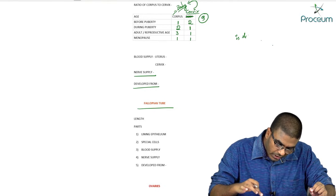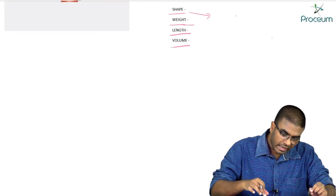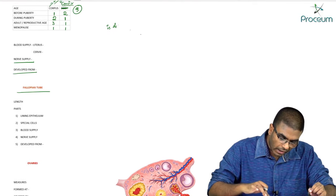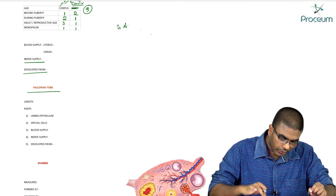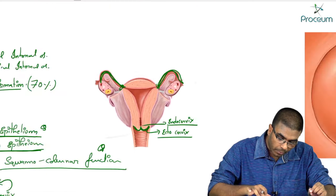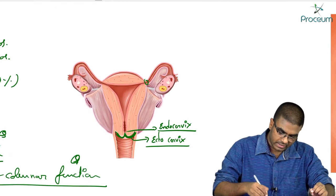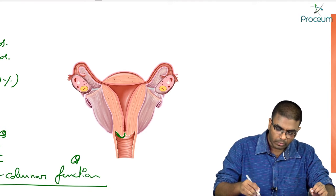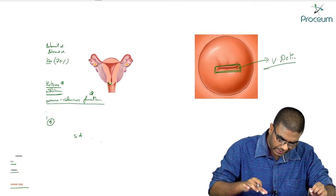These fallopian tubes have certain parts. You have to know the parts and the important points you need to keep in mind. Let's discuss the important parts — let me show you one more image so that you'll have a clear idea.